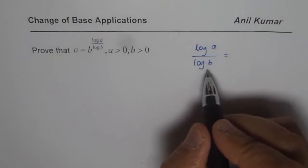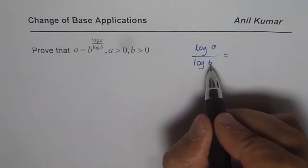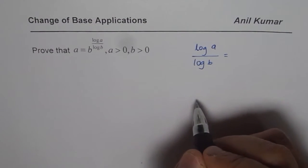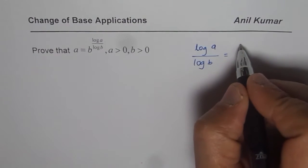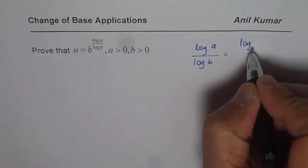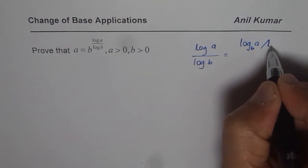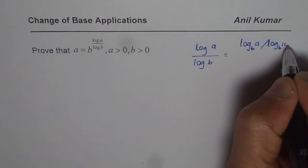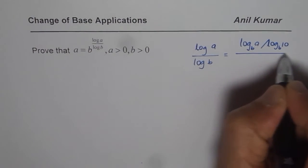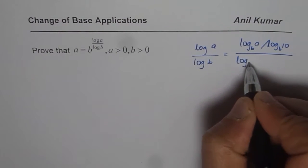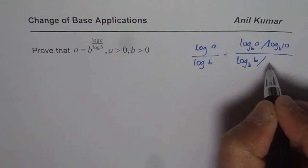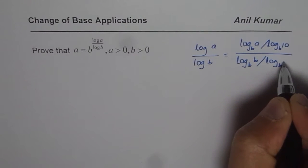Now, let us change the base to B for both numerator and denominator. If I change the base to B, the numerator will become log B of A divided by log B of 10, since this is base 10. On the other hand, the denominator will become log B of B divided by log B of 10.